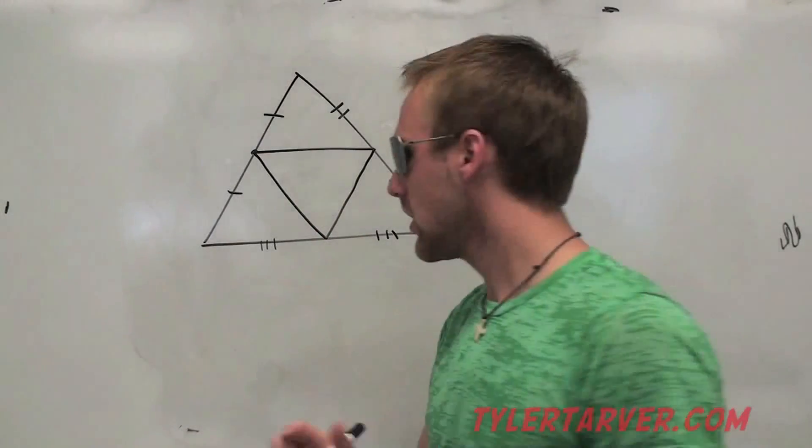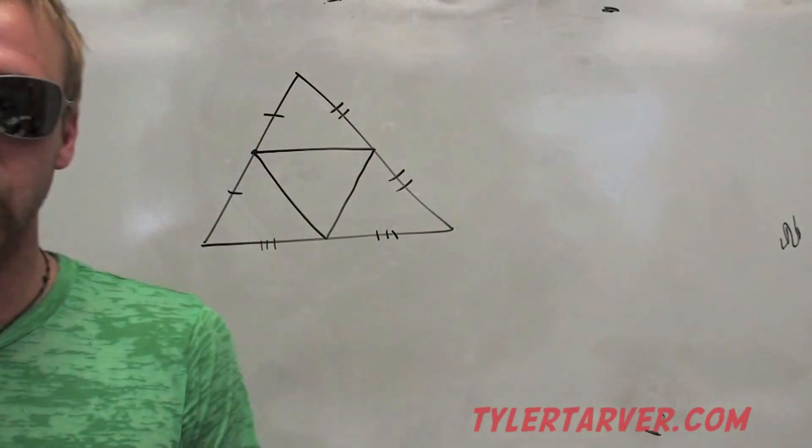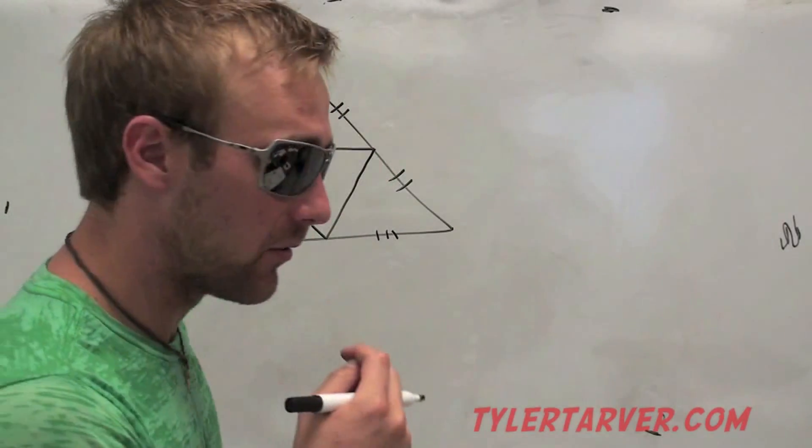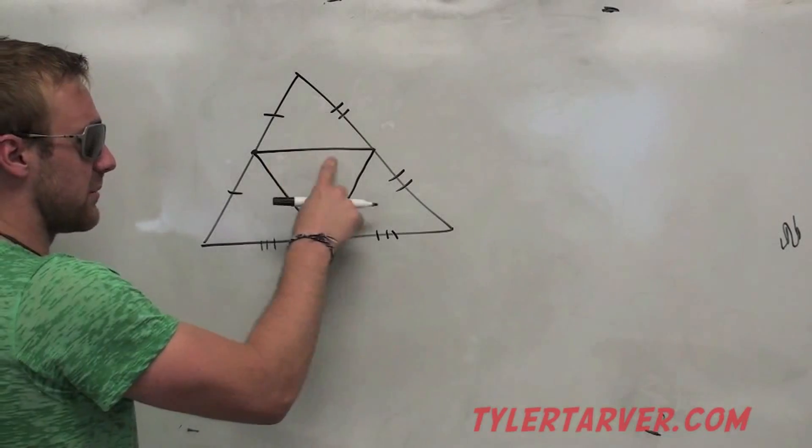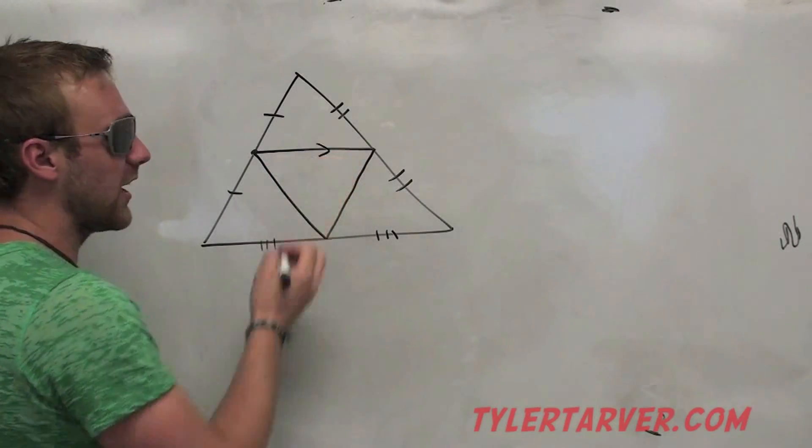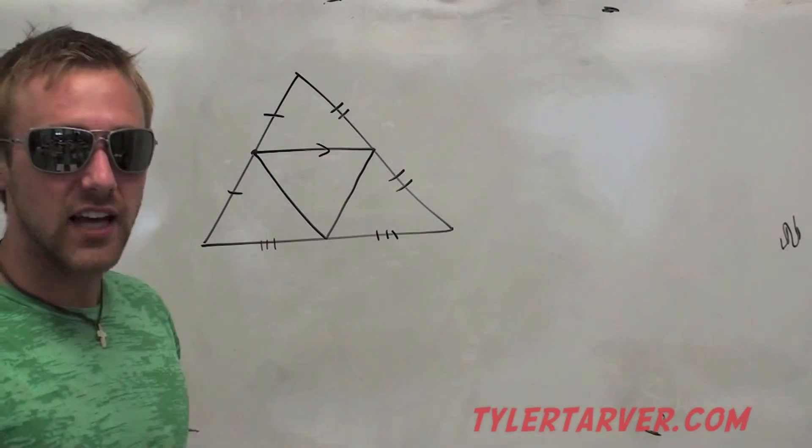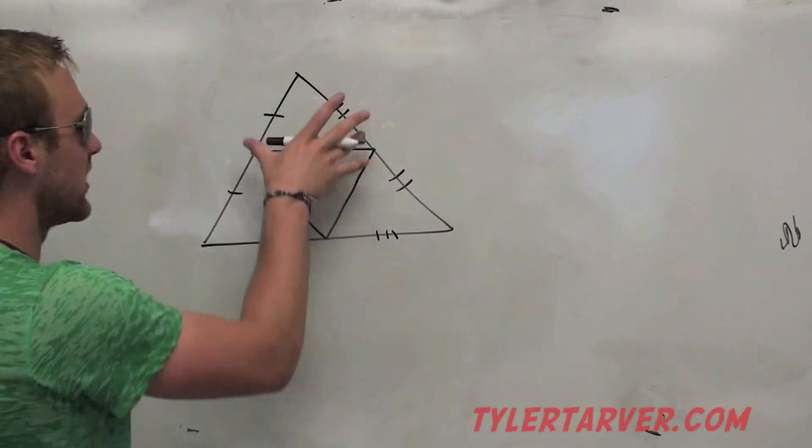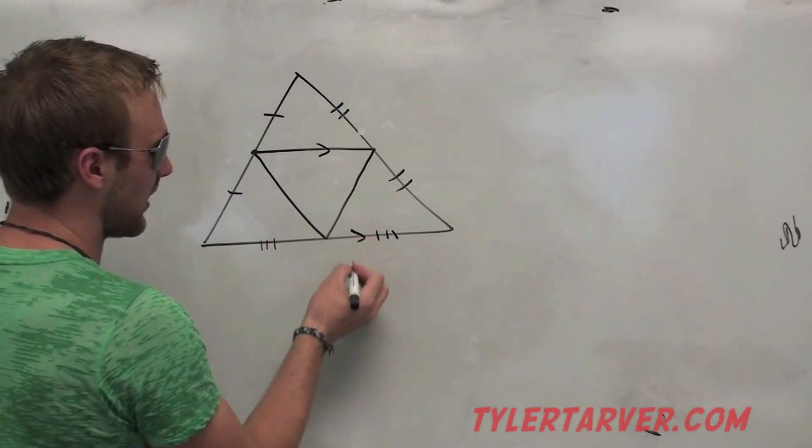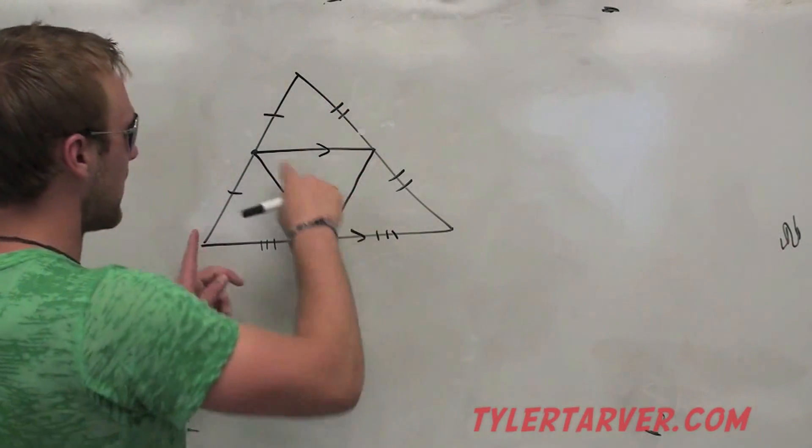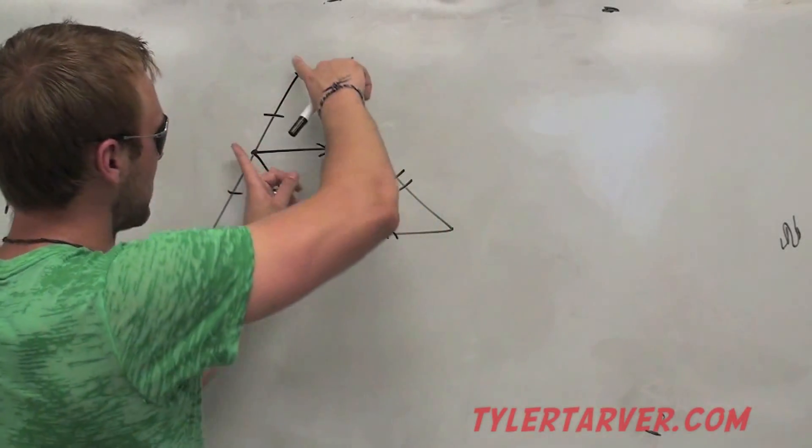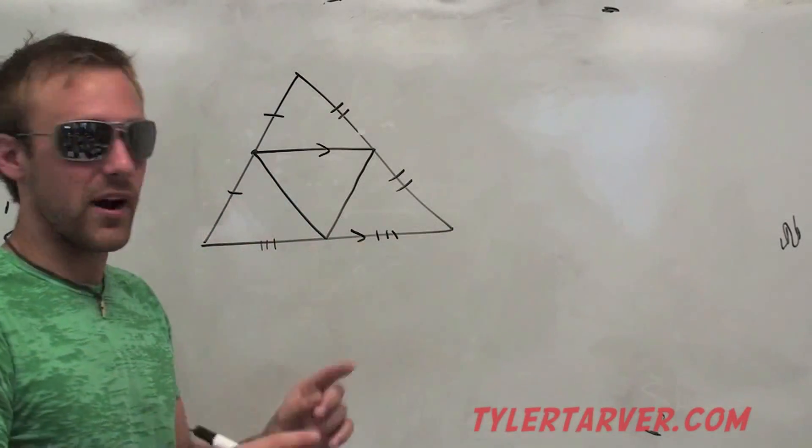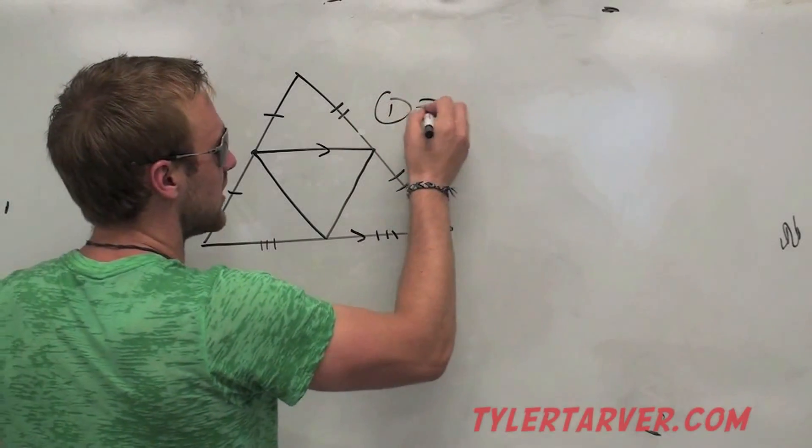Now, there's two important things you need to know about the mid-segment of a triangle. First thing, the mid-segment is always parallel to the only side of the triangle that it doesn't touch. It touches these two, that means it's parallel to this. This one is parallel to this one, this one's parallel to this one, and this one's parallel to this one. So the first thing is, it's parallel.